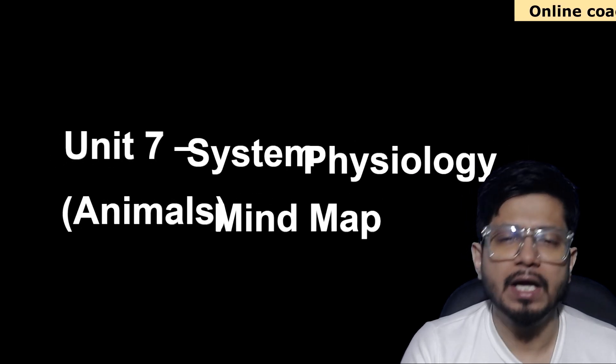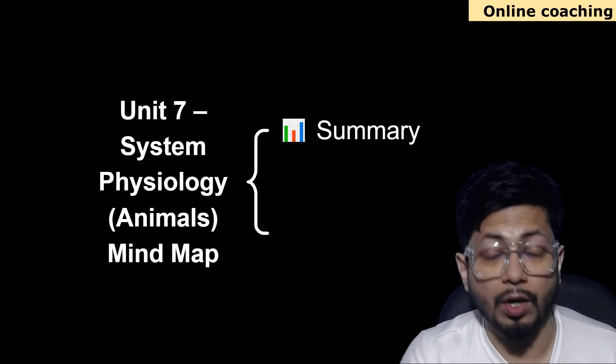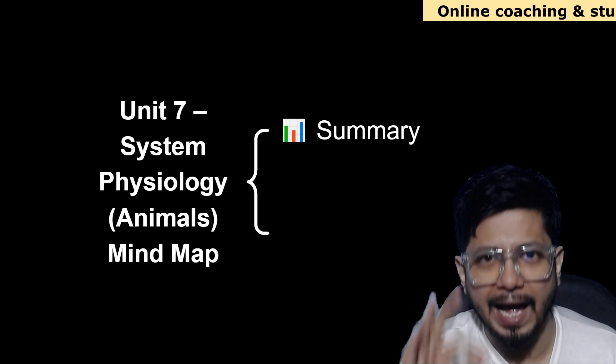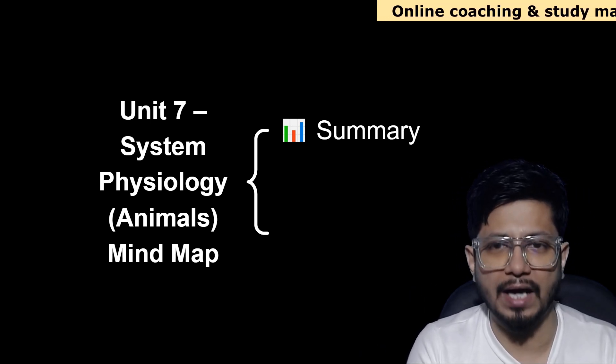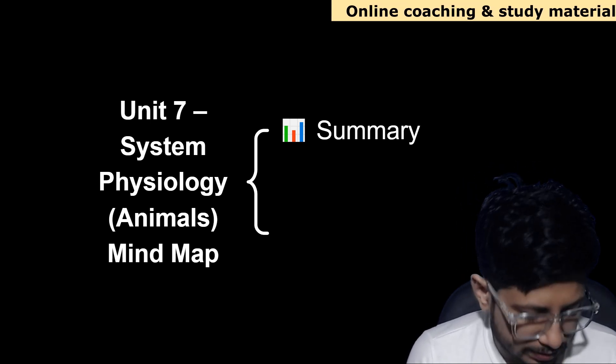So let's look at the mind map. First, we'll talk about the summary of this animal physiology or rather human physiology. Then we'll talk about the high yield topics and the frequency of asking the question repeatedly.